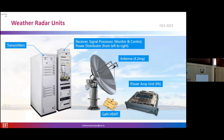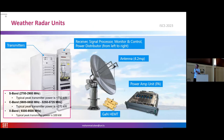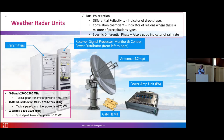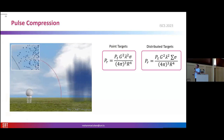Now we are talking about these weather radars which are typically very large, with transmitting and receiving antennas operating simultaneously. Different frequency bands are dedicated to them: S-band, C-band, and X-band. The peak power for S-band is something around 750 kilowatts. These radars work in dual polarization, transmitting in both vertical and horizontal polarizations.